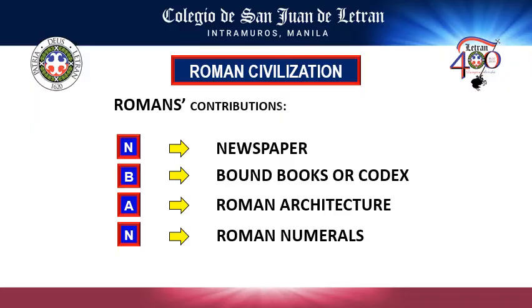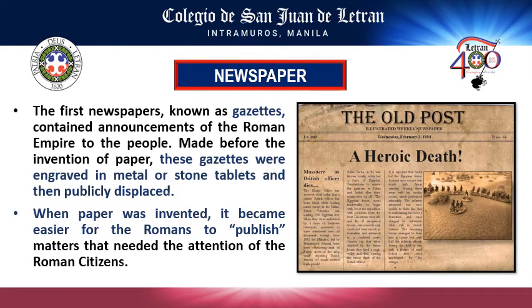The first newspapers developed by the Romans were known as gazettes. These gazettes were engraved in metals or stone tablets and publicly displayed. When Egypt was able to invent paper from papyrus, it became easy for the Romans to publish news for the attention of Roman citizens.